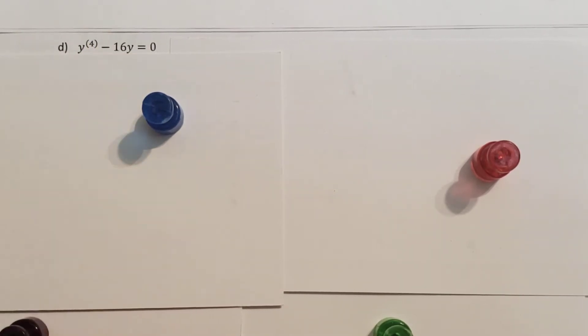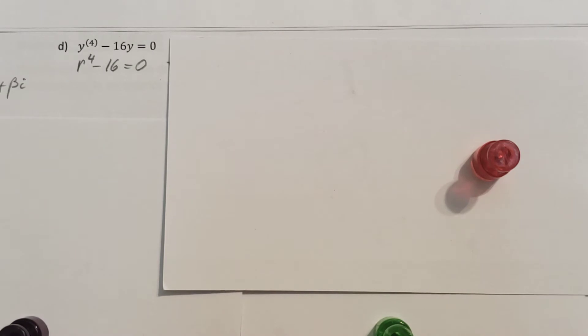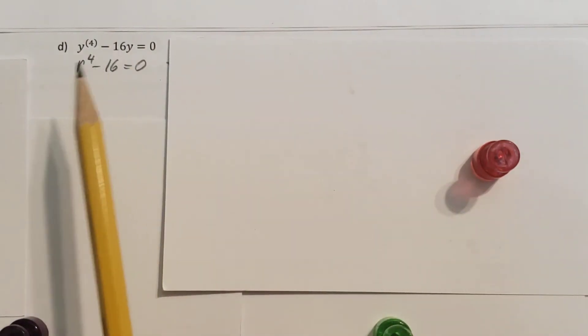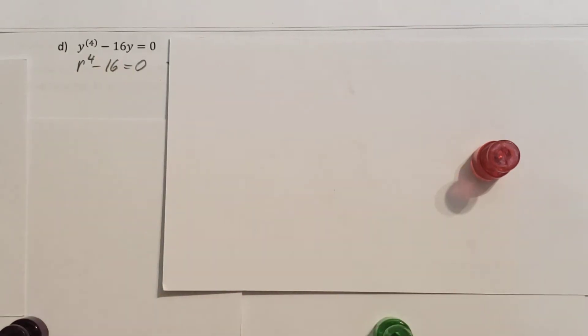Now, homogeneous, there's nothing on the right-hand side, so let's go ahead and find the characteristic equation, which is r to the fourth minus 16 equals 0.